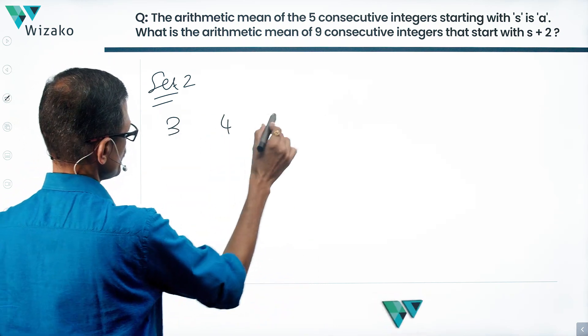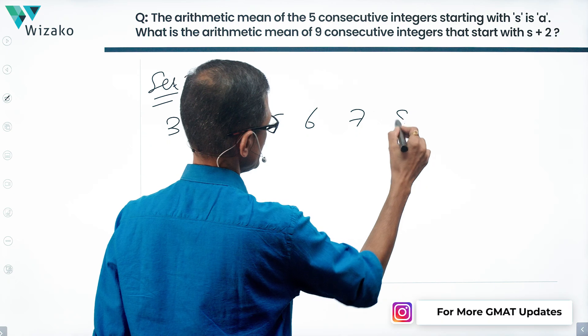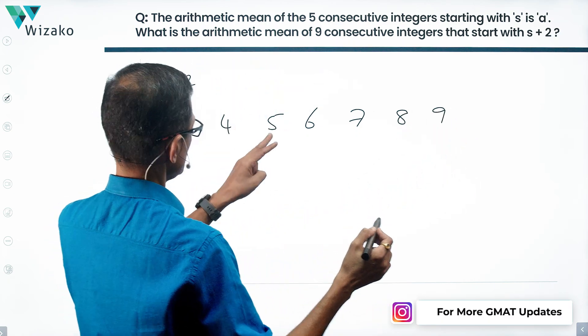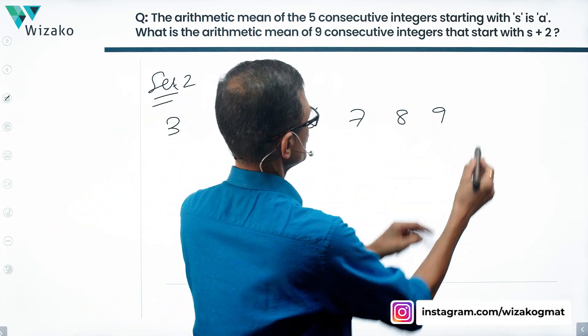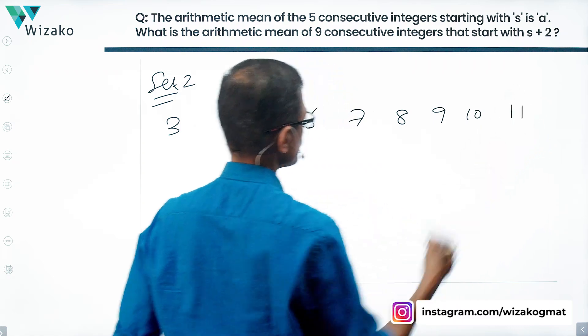3, 4, 5, 6, 7, 8, 9, 10, 11. So these are the 9 numbers.